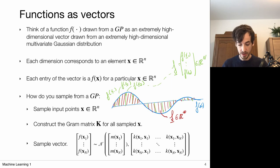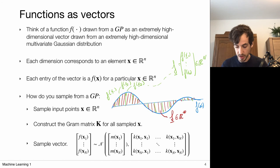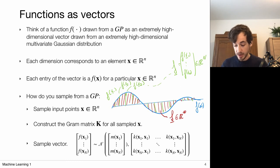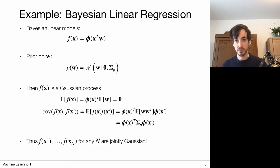To sample a Gaussian process, define a grid of input points x on which to evaluate the function. Construct the Gram matrix — the matrix of all kernel evaluations between pairs of points. This defines a multivariate Gaussian distribution of size equal to the number of grid points, and drawing from it gives a different function sample each time. In the next video, explicit examples of such randomly sampled functions will be shown.